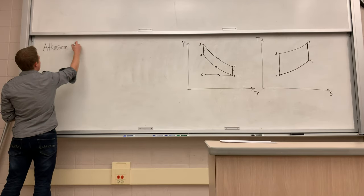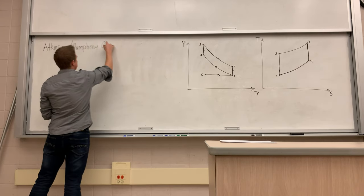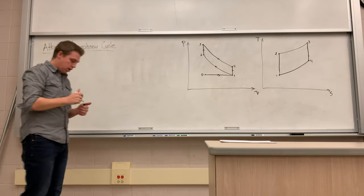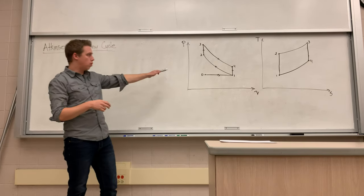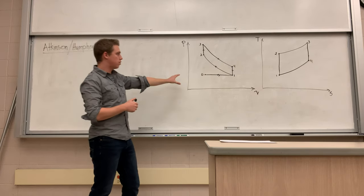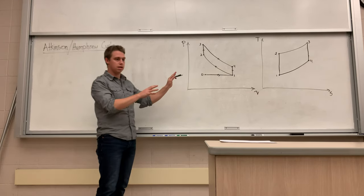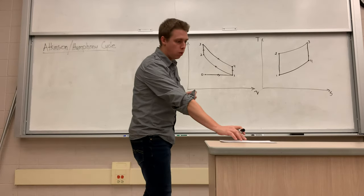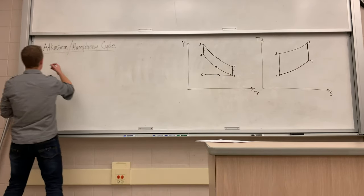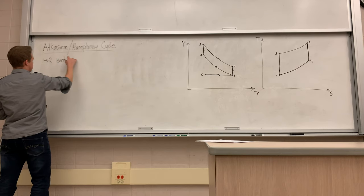This is sometimes called the Atkinson-Humphrey cycle, so we'll give Humphrey some credit too. On the board I have the Otto cycle from last lecture — both diagrams should look familiar. Let's quickly note the steps: going from one to two is isentropic compression.